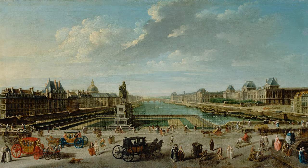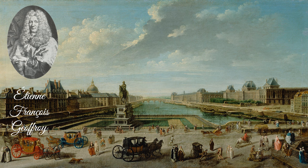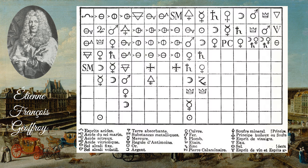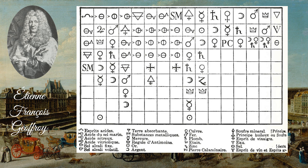In 1718, Etienne-François Geoffroy created the first table for the classification of elements, based on chemical affinity. It is considered by some historians as the start of the chemical revolution.